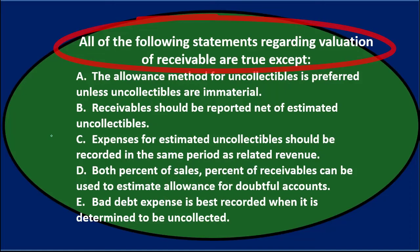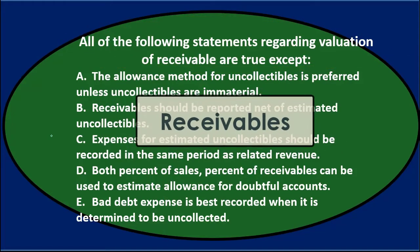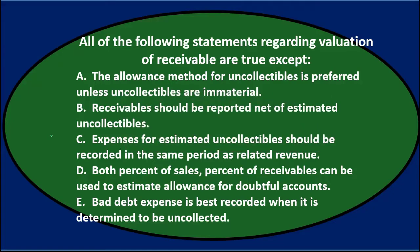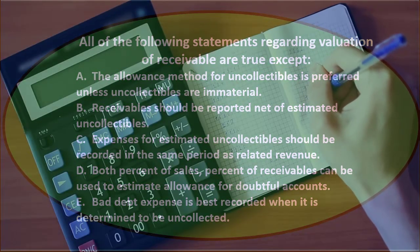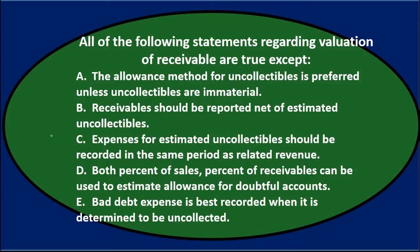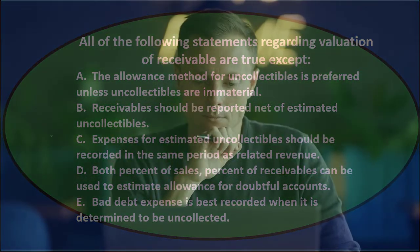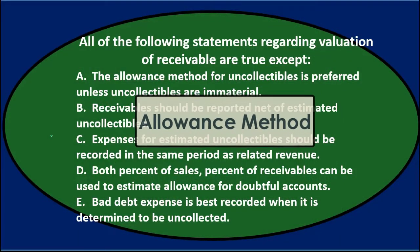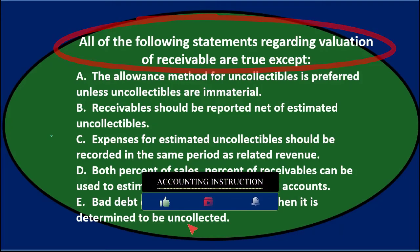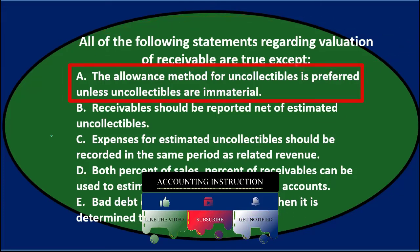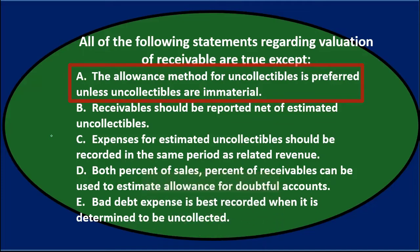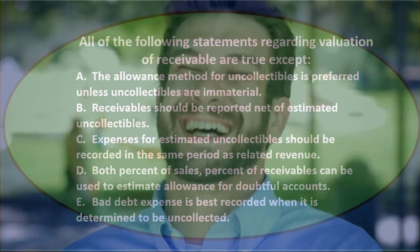All the following statements regarding valuation of receivables are true except — so remember, we're evaluating receivables using either the direct write-off method or the allowance method. The allowance method is generally the preferred method, so we're leaning towards statements that reflect the allowance method as best practice. A says the allowance method is preferred unless uncollectibles are immaterial — that seems reasonable and therefore true.